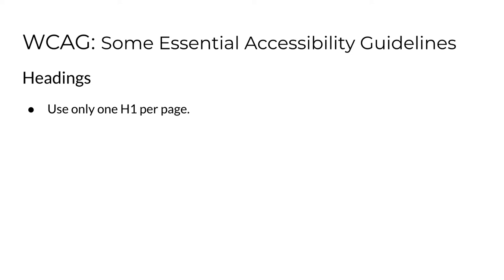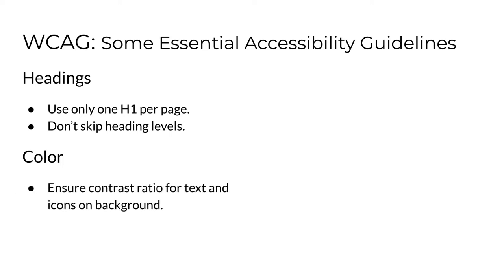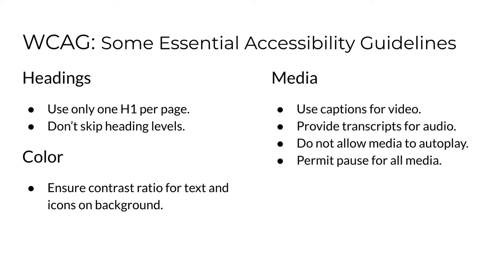As for headings, a site should use only one heading level per page and shouldn't skip heading levels. In other words, heading level three can be used only if it appears under heading level two. For color, there should be sufficient contrast between text and icons and the background. For media, a site should provide captions for video and transcripts for audio, there should be no media set to autoplay, and all media should permit a user to pause the play.